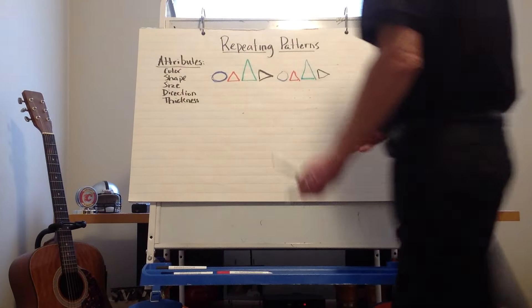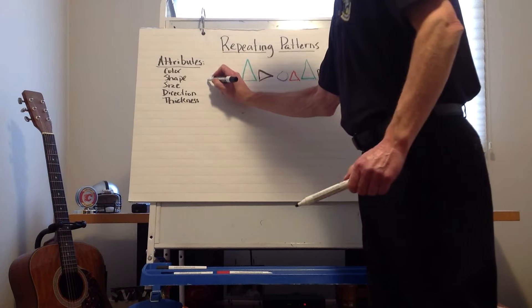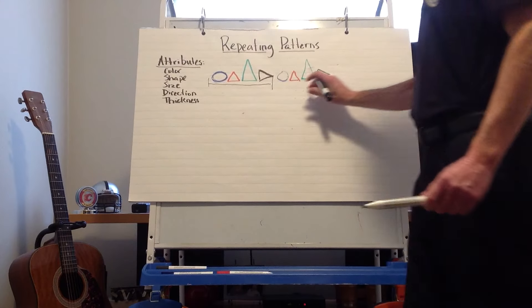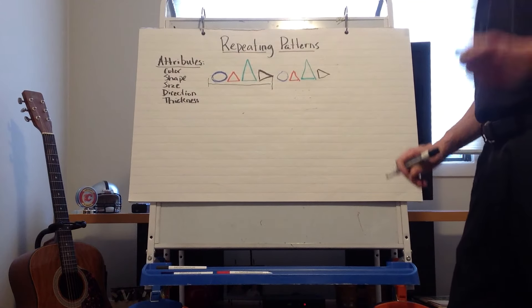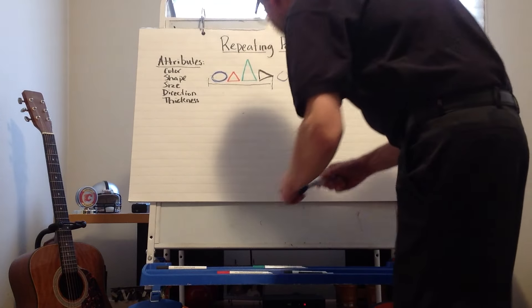So as you can see, now I've done the pattern once. Here's my core and I'm going to underline it right now while I remember. Here's my core. I've done it a second time. Now I have to do it just one more time to do three sets.